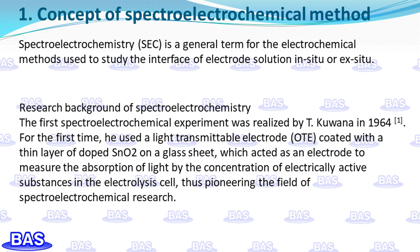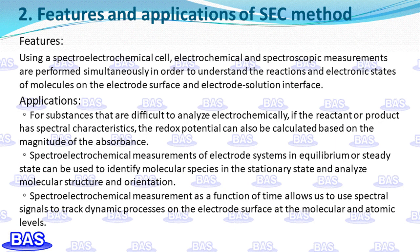Spectro-electrochemistry is a general term for electrochemical methods used to study the interface of electrode solution in situ or ex situ. The first spectro-electrochemical experiment was realized by T. Kuwana in 1964. For the first time, he used a light-transmissive electrode coated with a thin layer of stannic oxide doped on a glass sheet, which acted as an electrode to measure the absorption of light by electrically active substances in the electrolysis cell, pioneering the field of spectro-electrochemical research. Using a spectro-electrochemical cell, electrochemical and spectroscopic measurements are performed simultaneously to understand the reactions and electronic states of molecules on the electrode surface and electrode-solution interface.